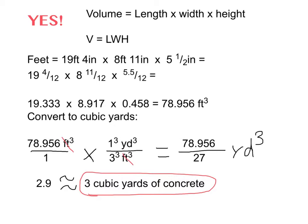So 78.956 over 1 times 1 cubed over 3 cubed. Any time you cube 1 or take 1 to any positive power, you're still just going to have 1 because in this case it's 1 cubed, 1 times 1 times 1 is still just 1. So that number doesn't change, our numerator is still 78.956.